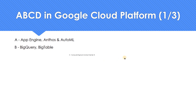C for Compute Engine — this is where everybody watching this video would have started their journey in GCP. You start with a virtual machine and slowly build up other components. And there's a newer component called Contact Center AI — with COVID-19 coming into picture, everything needs to be virtual, so Contact Center AI can play a major role there.